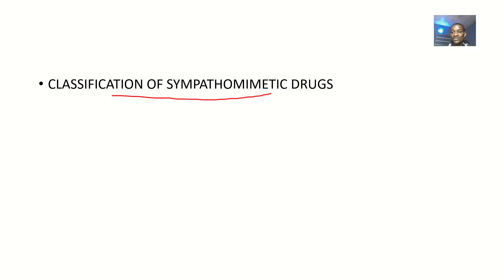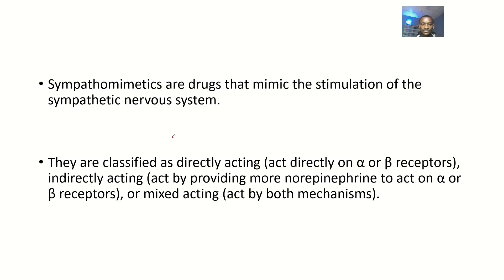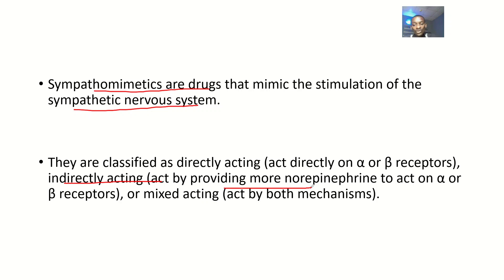Classification of sympathomimetic drugs: sympathomimetic drugs are drugs that agonize — or mimic the actions of — the sympathetic nervous system neurotransmitters. They are classified as directly acting, which act on alpha and beta receptors, or indirect acting, which act by providing more norepinephrine to the alpha and beta receptors. Or their actions could be mixed. So there are basically three classifications: direct acting, indirect acting, and mixed acting.